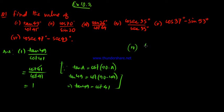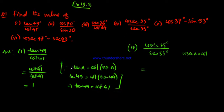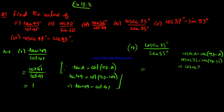For cosec 35 degree divided by sec 55 degree: cosec equals sec 90 minus theta. So cosec 35 equals sec(90 minus 35), which equals sec 55. So the dirty course: 35 equals sec(90 minus 35), and 90 minus 35 equals 55. Therefore the answer is 1.